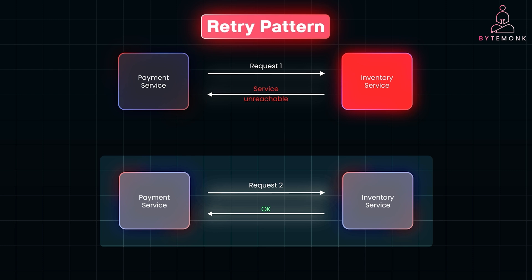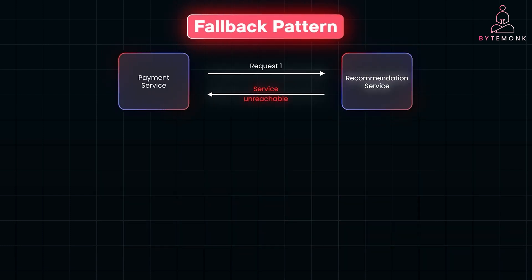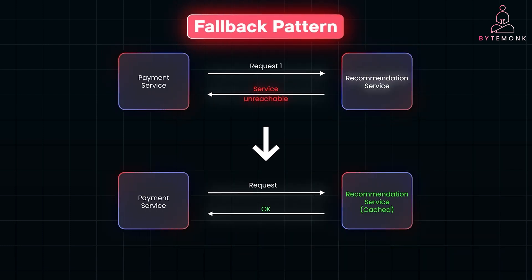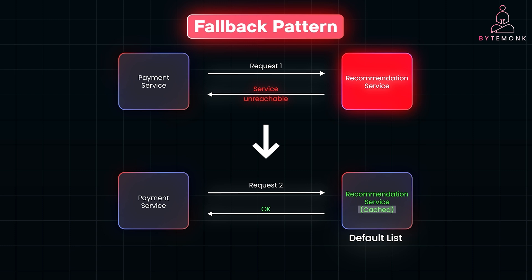Sometimes retries and circuit breakers aren't enough — that's where the fallback pattern comes in. Instead of failing entirely, the fallback pattern provides an alternative response when a service is unavailable. For example, imagine your recommendation service is down. Instead of showing an error message to users, you can display cached recommendations or a default list. It might not be as good as real-time recommendations, but it keeps the user experience intact while the system stabilizes.